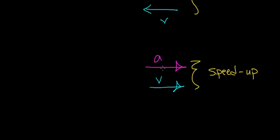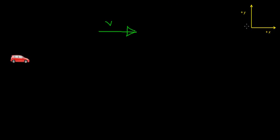So the only thing that the sign of the acceleration vector tells you is the direction in which the velocity is changing. It doesn't tell you the direction in which the object is moving. So let's do an example. In this example, we're going to have a car traveling in the positive x direction, and this is going to be our coordinate system.